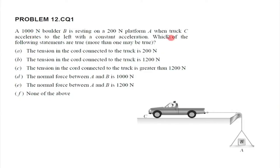This concept question tells us that a 1000 Newton boulder B is resting on a 200 Newton platform A. So the weight of A is 200 Newton and the weight of boulder B is 1000 Newton. When the truck accelerates, this entire assembly goes over a frictionless and massless pulley, and the truck starts accelerating in this direction with a constant acceleration. We are asked which of the following statements are true. Let us examine these statements using simple logic, and only write equations when simple intuition does not give us enough insight.